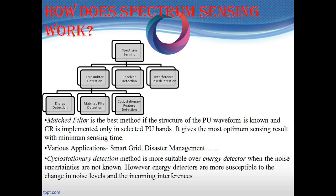These are the various spectrum sensing methods. Match filter is the best method if the structure of the primary user waveform is known, and cognitive radio is implemented only in selected primary user bands. It is considered to be the best for most frequently sensed channels to get the most optimum sensing results with the minimum sensing time. This can be used in various applications such as smart grid, disaster management, and many others.